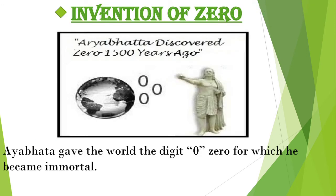Invention of Zero: Aryabhata was one of the world's greatest mathematician-astronomers. Aryabhata devised a number system which had no zero as a positional system, but used a dot to denote empty space. There is evidence that a dot had been used in earlier manuscripts to denote an empty space in positional notation. He gave the world the digit zero, for which he became immortal. He was the first mathematician to use the concept of zero and used it to define the decimal system. The French mathematician Georges Ifra argues that knowledge of zero was implicit in Aryabhata's place value system as a placeholder for powers of 10 with null coefficients.